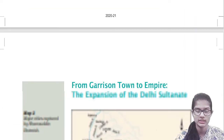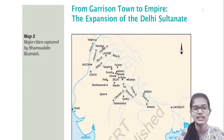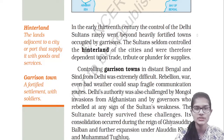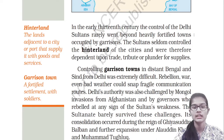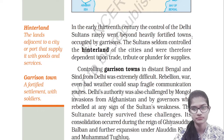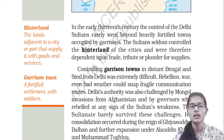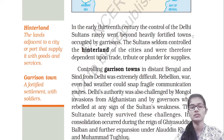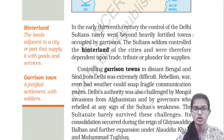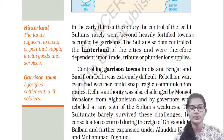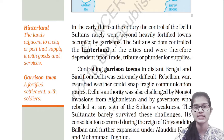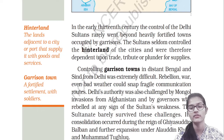Now, from garrison town to empire — the expansion of the Delhi Sultanate. In the early 13th century, the control of the Delhi Sultanate rarely went beyond heavily fortified towns occupied by garrisons. Garrisons are fortified settlements where soldiers are stationed. The Sultanate controlled the hinterland of the cities.